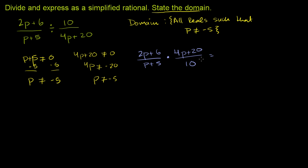Now this is going to be equal to 2p plus 6 times 4p plus 20 in the numerator and then p plus 5 times 10 in the denominator. Now in order to see if we can simplify this, we need to completely factor all of the terms in the numerator and the denominator. And in the numerator, 2p plus 6, we can factor out a 2. So the 2p plus 6, we can rewrite it as 2 times p plus 3.